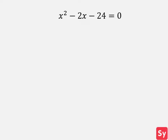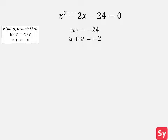Let's see some examples. First example, we have x squared minus 2x minus 24 equals zero. First, we want to find u and v such that uv equals negative 24 and u plus v equals negative 2. We find the factors of negative 24 that satisfy the sum equaling negative 2. U equals negative 6 and v equals 4.